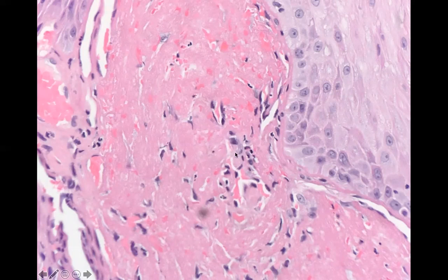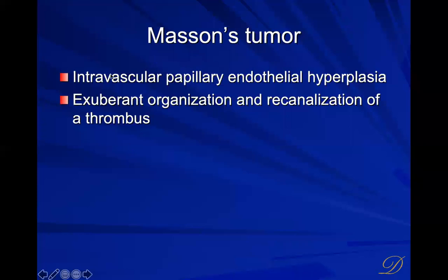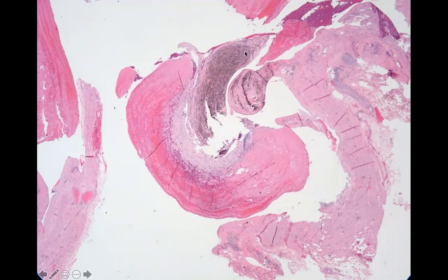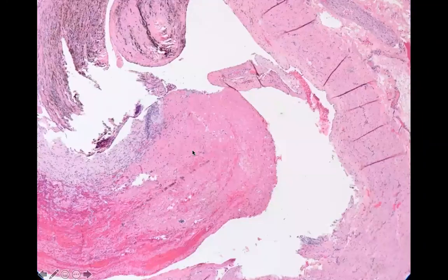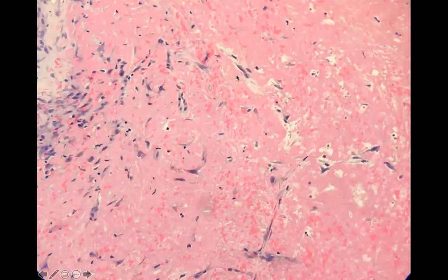Intravascular papillary endothelial proliferation — also called Masson's — is basically exuberant organization and re-canalization of a thrombus. The fibrin ball fills with endothelial cells making little papillary projections and vascular channels until enough open spaces allow blood to flow again. Here you see a big muscular vessel wall with a giant thrombus ball, hemosiderin from chronicity, and endothelial cells making papillary projections creating little open vascular channels.